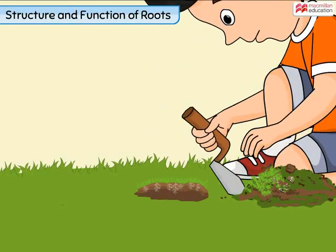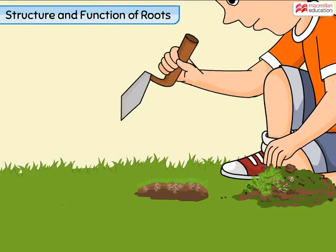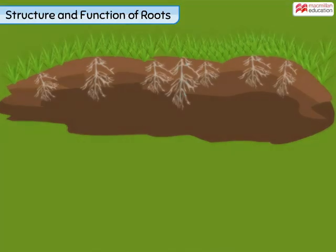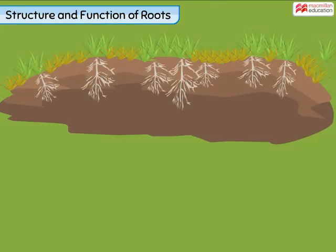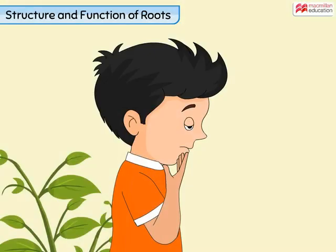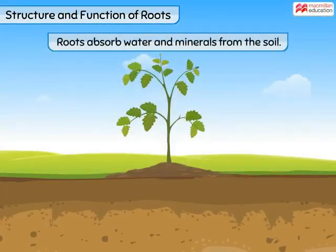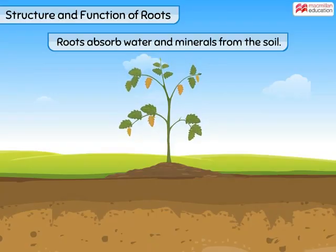Now look at this boy digging holes in the soil. While making the holes, the boy removed the roots of some grass plants. After a few days, he noticed that the plants whose roots were removed dried up and died. Can you think of the reason why the plants died? Roots absorb water and minerals for the plant from the soil. In the absence of roots, the plants could not get water and died.